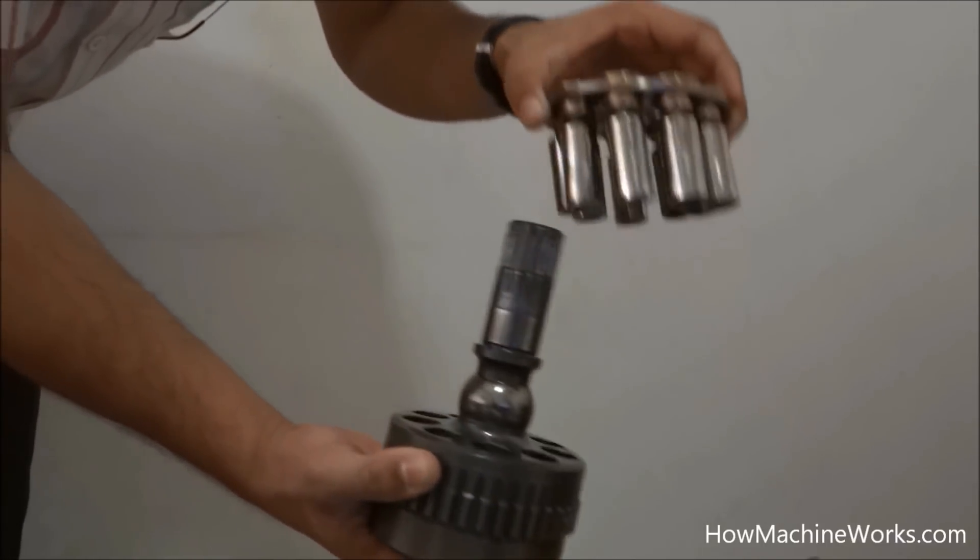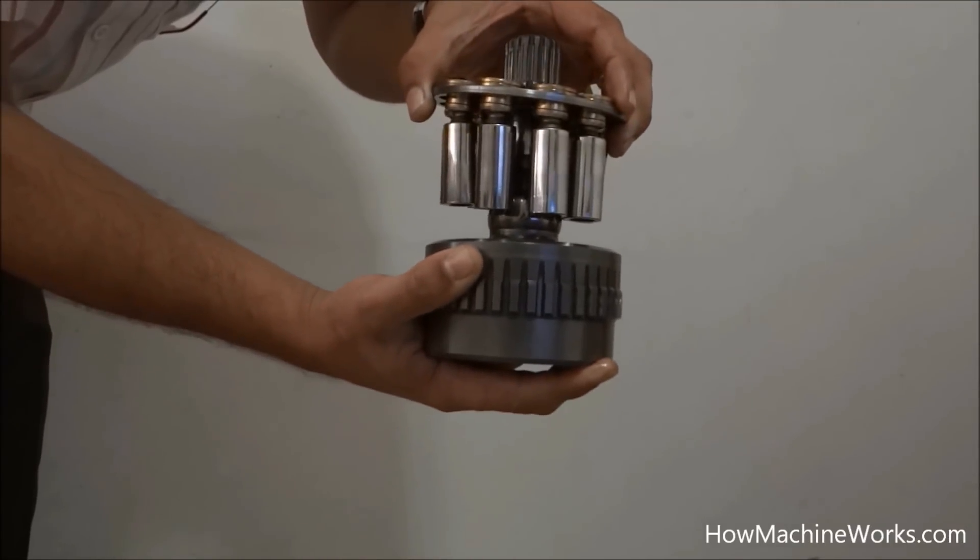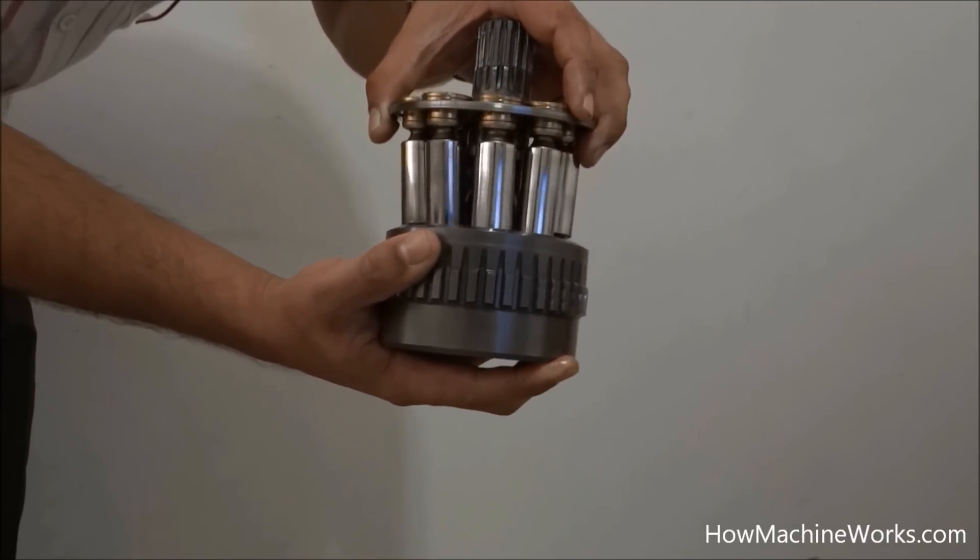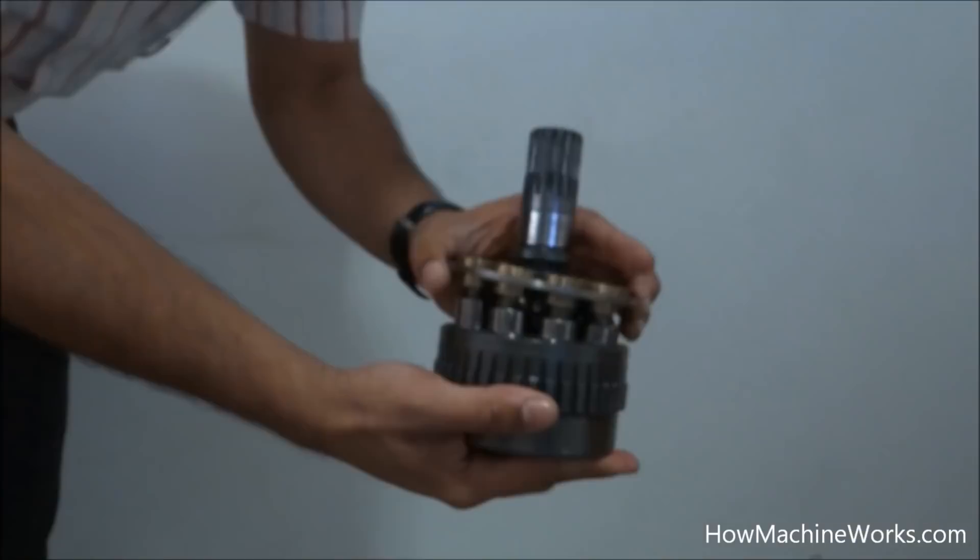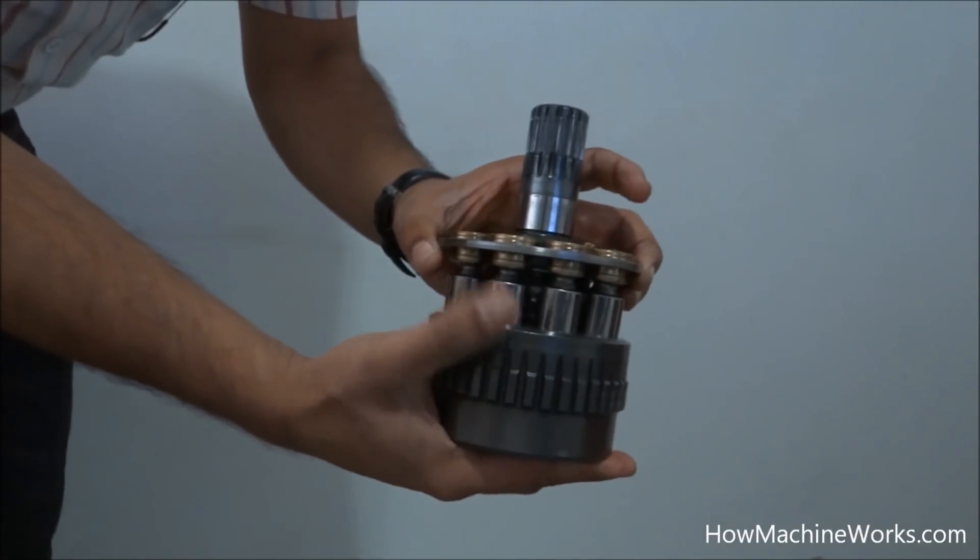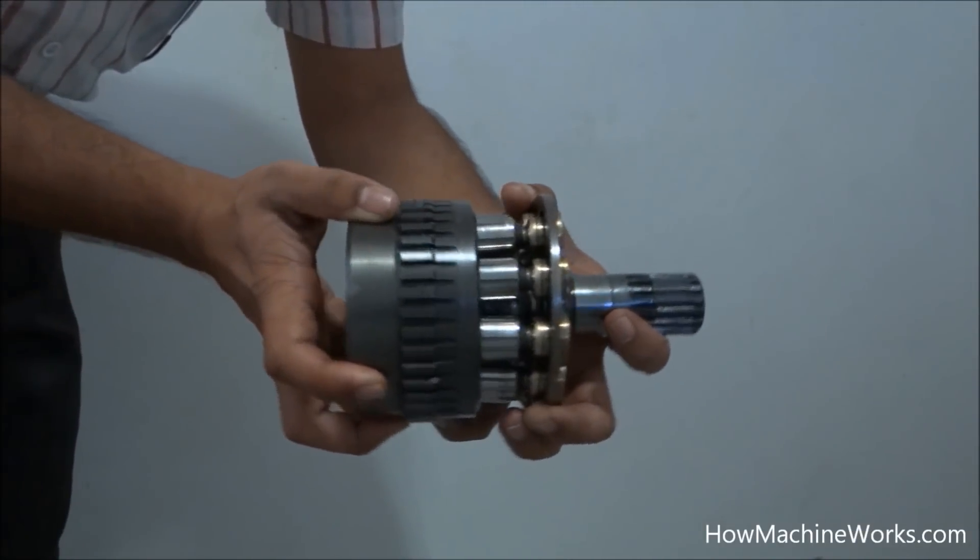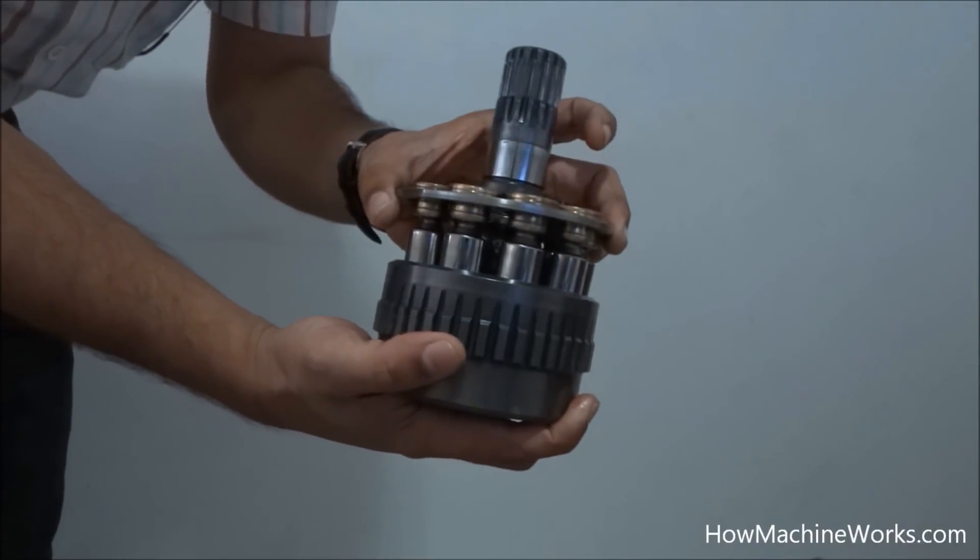And make sure that once it is removed, it should be given back into the same pot and should not be changed. Because they have already mated and scoring marks will be like a male-female scoring mark. So it has to be inserted in the same pot. So that's how it looks.